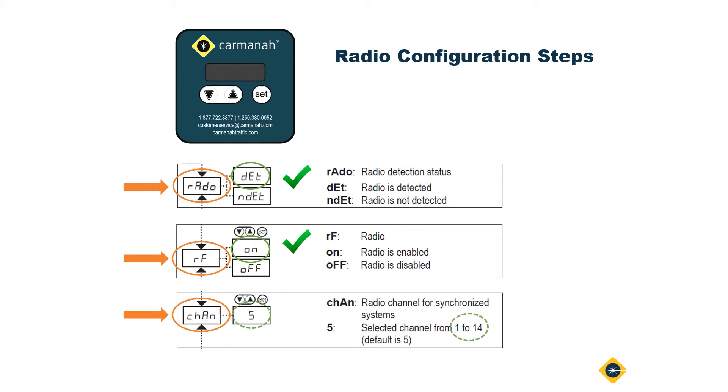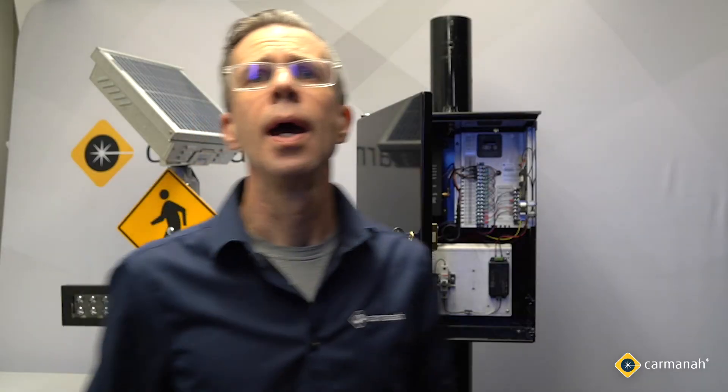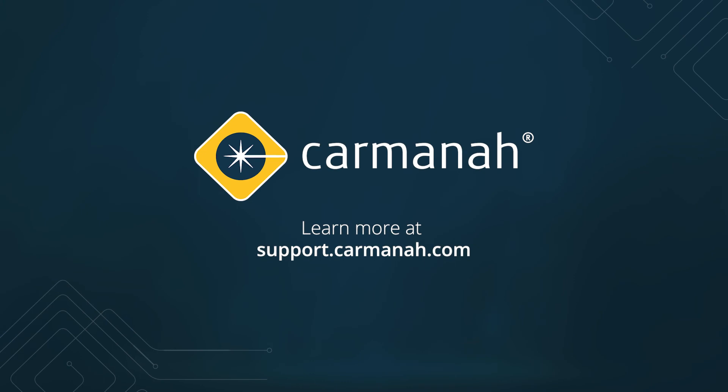Lastly, scroll to the channel setting, abbreviated as CHAN, and choose the desired channel anywhere from 1 to 14. One final note: if you have multiple crosswalk systems or systems in close proximity to one another — 1000 feet or less — ensure that you choose a unique channel for each crosswalk. This will prevent any crosstalk and phantom activation. Thanks for watching.